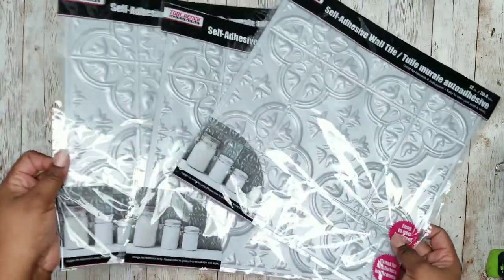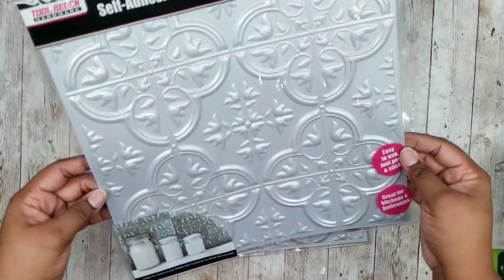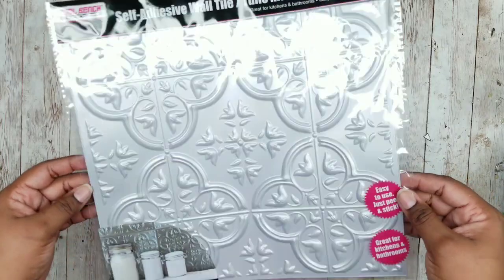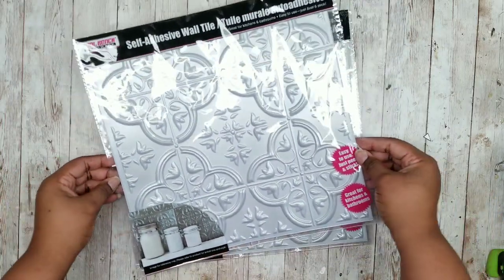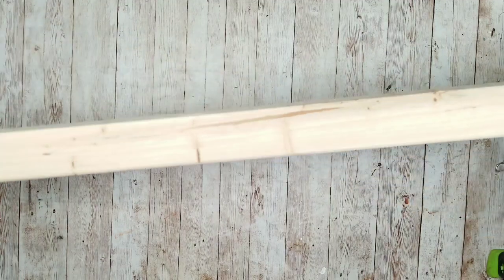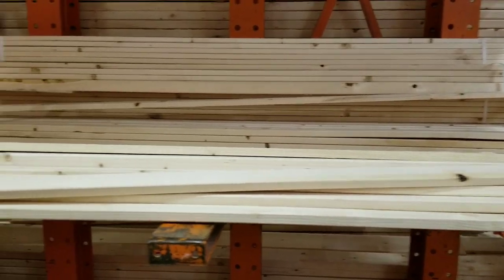For this project we will need one of these peel and stick tiles for each panel you wish to create and these come in a silver tone and they are available for a dollar each from the Dollar Tree. We also need one 1x2 for each of the frames and these are available in 8 foot lengths from the Home Depot for about $1.78.